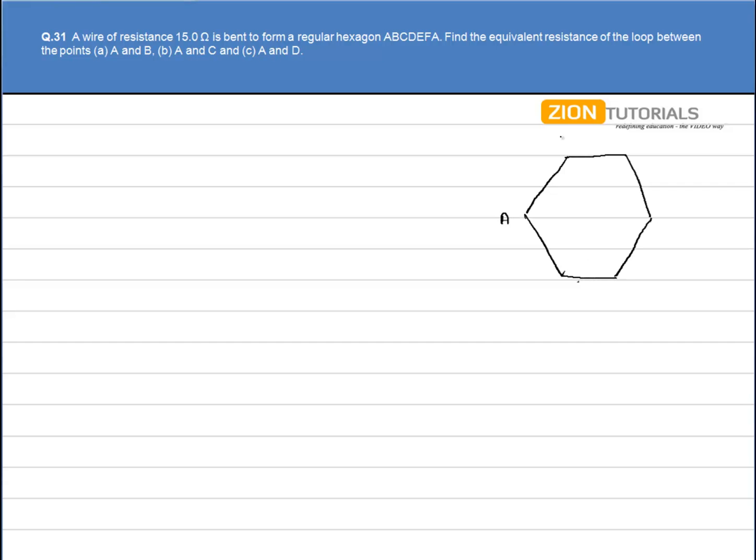We have points A, B, C, D, E and F. Now since the wire has a total resistance of 15 ohm, we have to calculate the equivalent resistance.